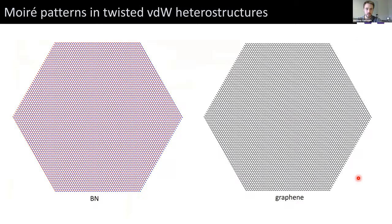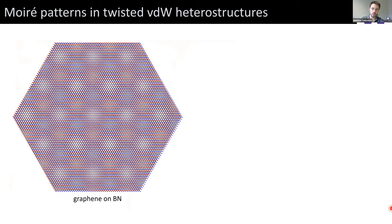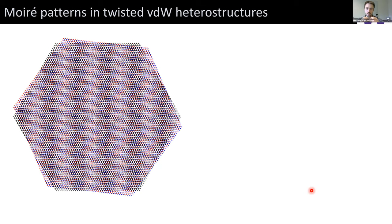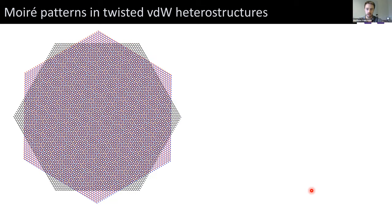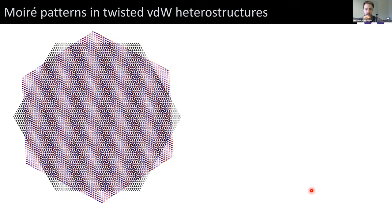Another interesting feature of these systems comes from understanding what happens to the symmetry when you stack two materials on top of each other. Graphene and boron nitride are structural isomorphs — both have this honeycomb structure. Graphene is made of carbon atoms; boron nitride has alternating boron and nitrogen. When we overlay them, due to a slight difference in the lattice constant, we find the emergence of a long-wavelength triangular superstructure called a moiré pattern. The period depends on the twist angle and lattice mismatch.